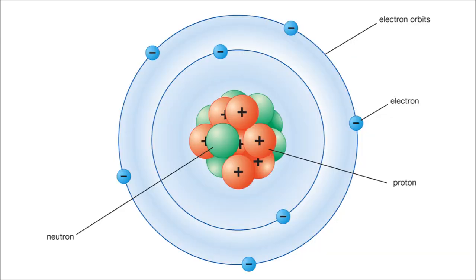To understand the island of stability, one has to understand atomic structure and the reason behind atomic decay. Atoms are comprised of protons, neutrons, and electrons, the latter of the three found in a cloud around the center of the atom, and the first two located in the center, known as the nucleus.